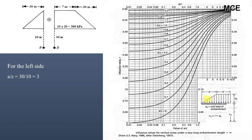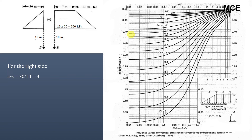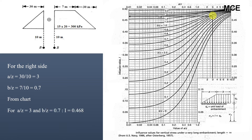Using the Osterberg chart for the left triangular side: a/z = 30/10 = 3, b/z = 0. Drawing a vertical line at a/z = 3, it cuts the curve for b/z = 0; the horizontal from that point gives an influence value of 0.39. For the right trapezoidal side: a/z = 3 and b/z = 0.7, giving an influence value of 0.468.